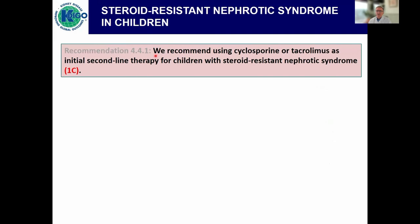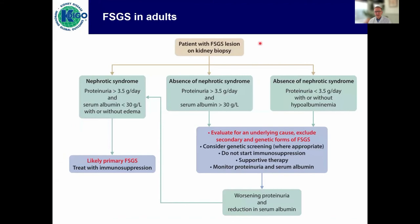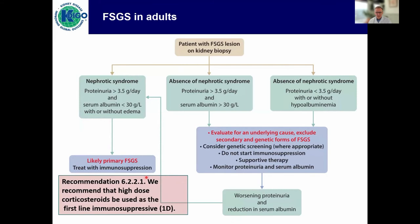After achieving complete remission, most patients relapsed — 80% did within one and a half years — but the good news is there was no difference between the two approaches. So a primary CNI-based approach seems a valid alternative to corticosteroids, in particular since adverse events were comparable. In children with steroid-resistant nephrotic syndrome, we recommend a calcineurin inhibitor as initial second-line therapy. For FSGS in adults, if there is an adult with nephrotic syndrome — stressing syndrome, not just proteinuria — that's likely primary FSGS and that patient should receive immunosuppression with high-dose corticosteroids.